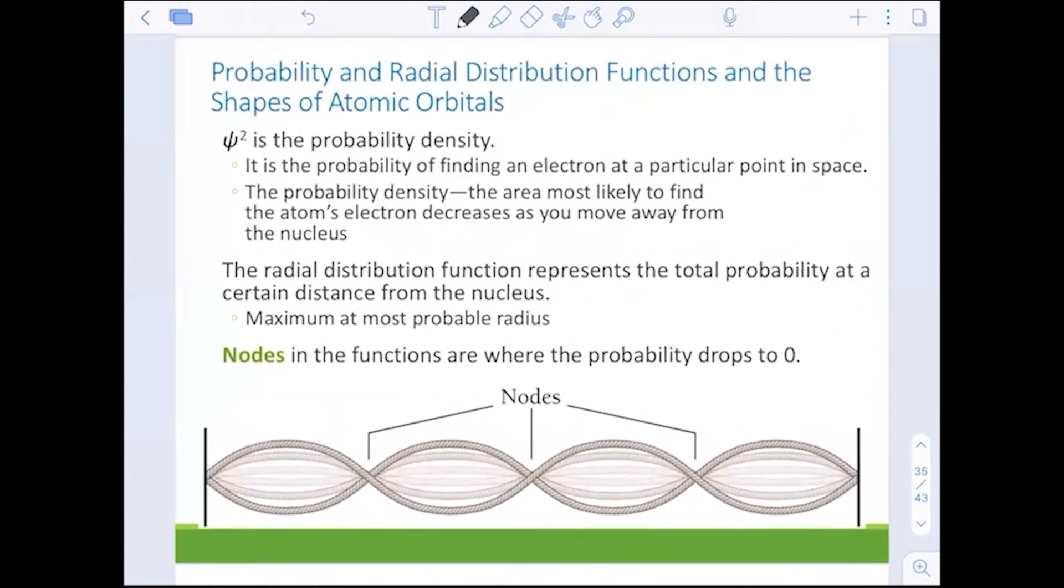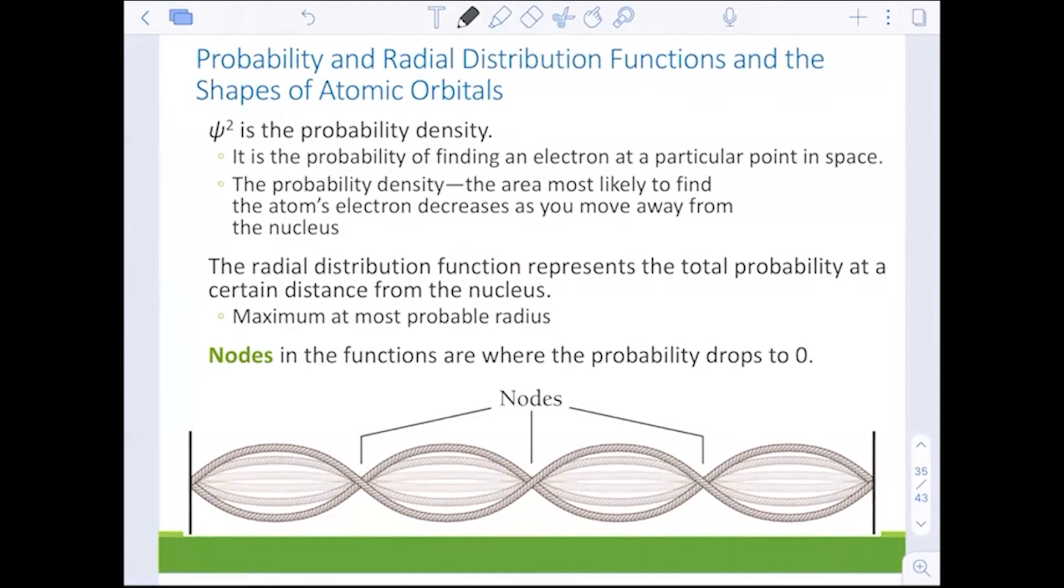Now, why we have these shapes and how the actual math works, I'm going to just briefly identify and show you some pictures. When psi squared is determined, it's the probability density. And it's the probability of finding an electron at a specific point in space around the nucleus in the electron cloud. Most likely area to find the atom's electron decreases as you move away from the nucleus. Nodes are probabilities of zero. It's when the function says that there is not any likelihood that the electron is there. One very big node is the actual center where the nucleus is.